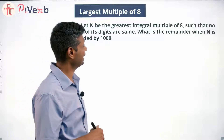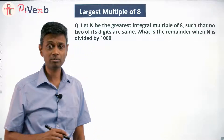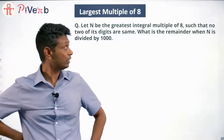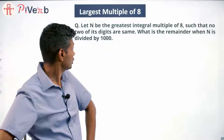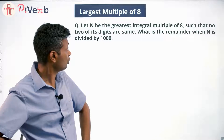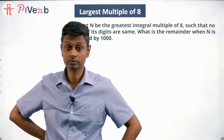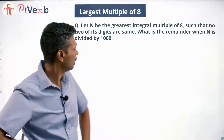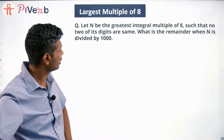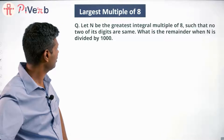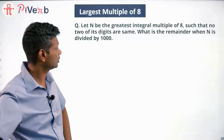Let n be the greatest integral multiple of 8 such that no two of its digits are the same. What is the remainder when n is divided by 1000?